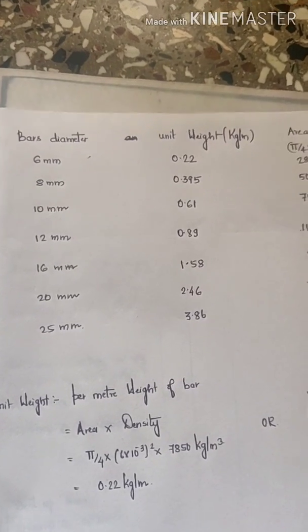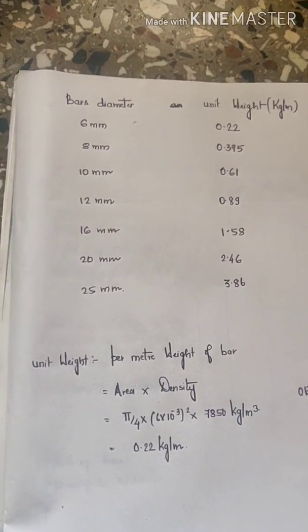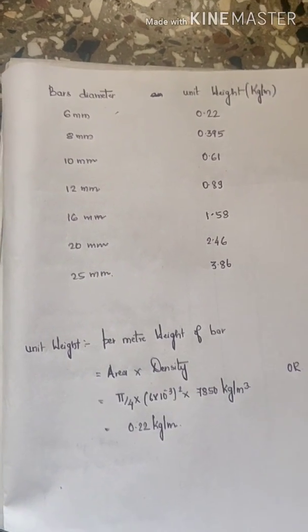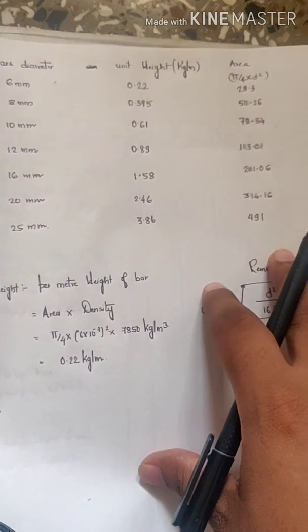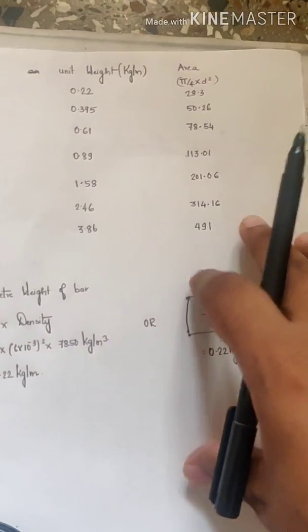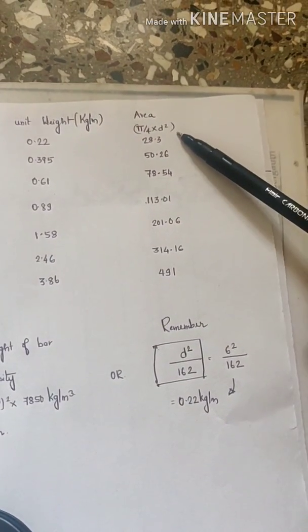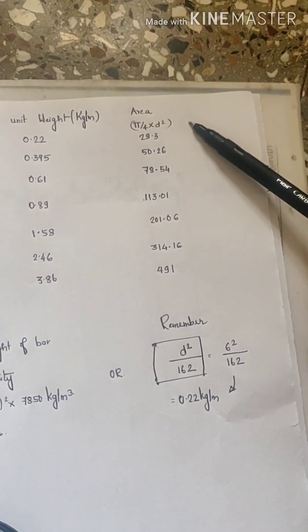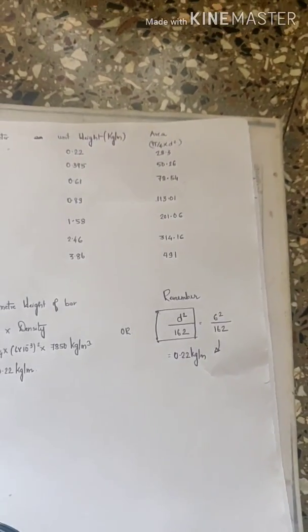I have restricted the bar diameters up to 25mm. We have bar diameters beyond 25mm, but for now we will restrict it up to 25mm. To calculate the unit weight, you should know what is the area of the bars. Area of the bar is calculated using a formula pi by 4 into d square.